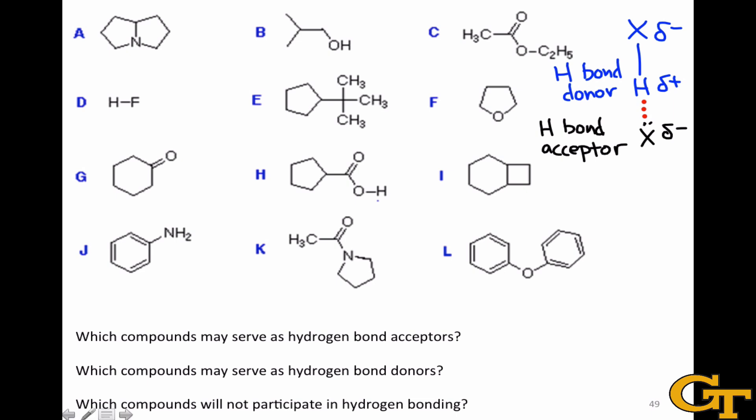In the case of molecule A, we see a nitrogen atom. This nitrogen has a lone pair on it, and so it can certainly act as a hydrogen bond acceptor. However, it does not include any nitrogen-hydrogen bonds, and so it cannot act as a hydrogen bond donor.